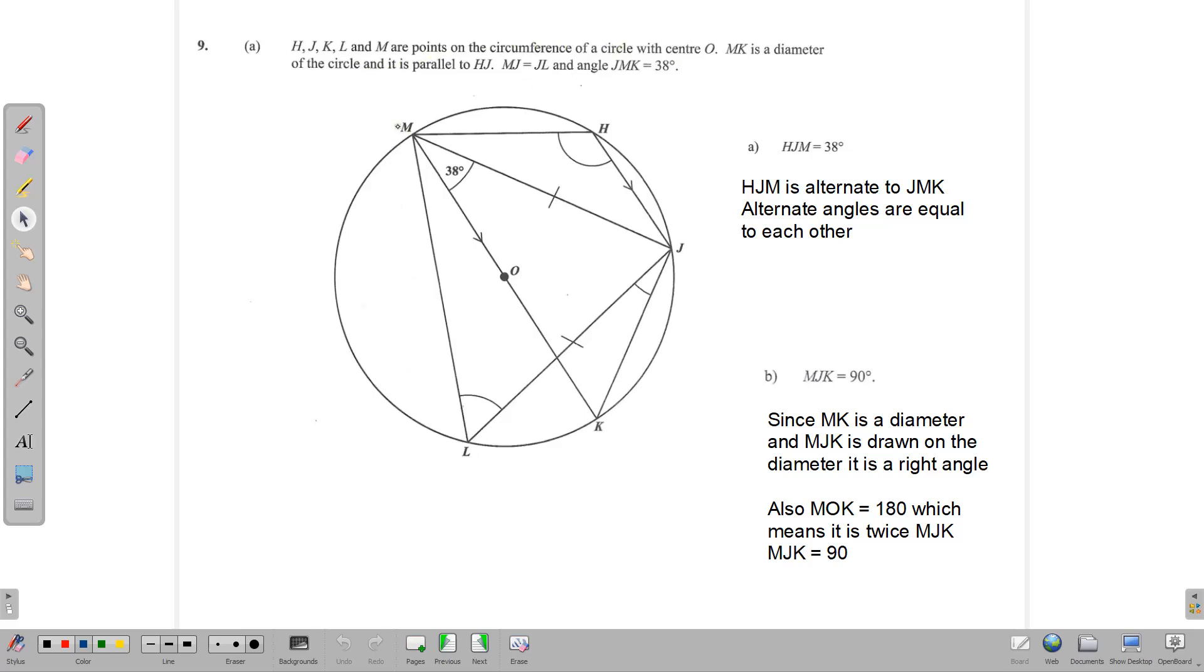MK is a diameter and is parallel to HJ. Also, MJ is equal to JL, and the angle JMK is equal to 38 degrees.